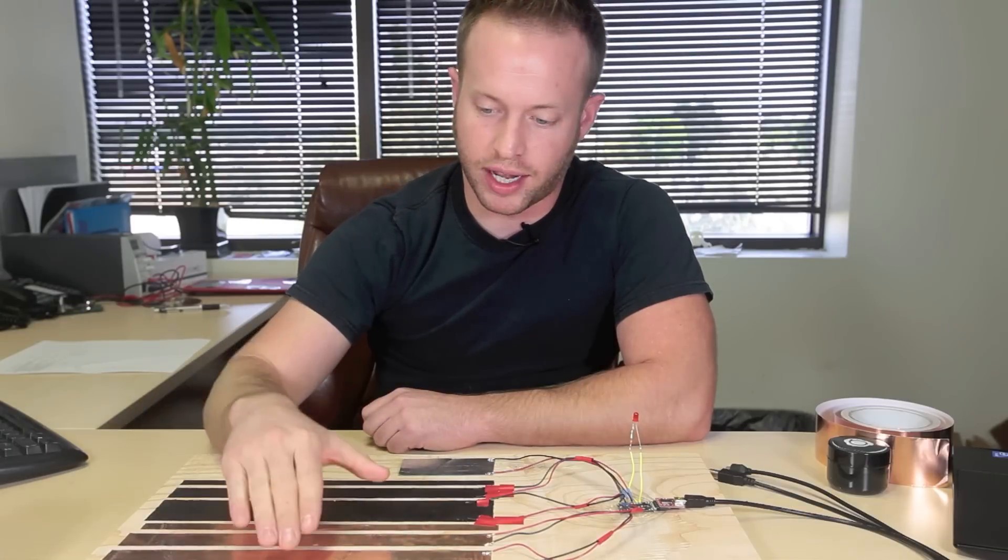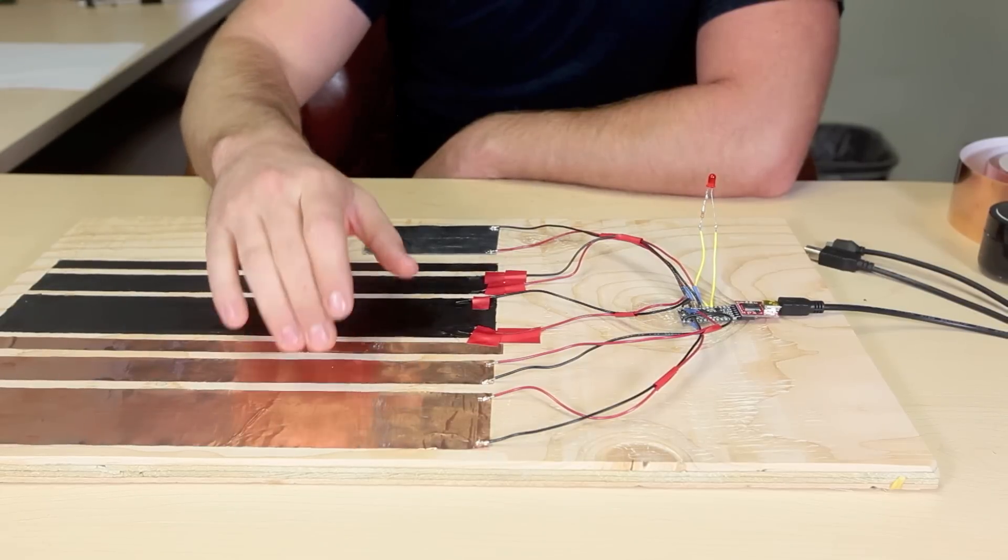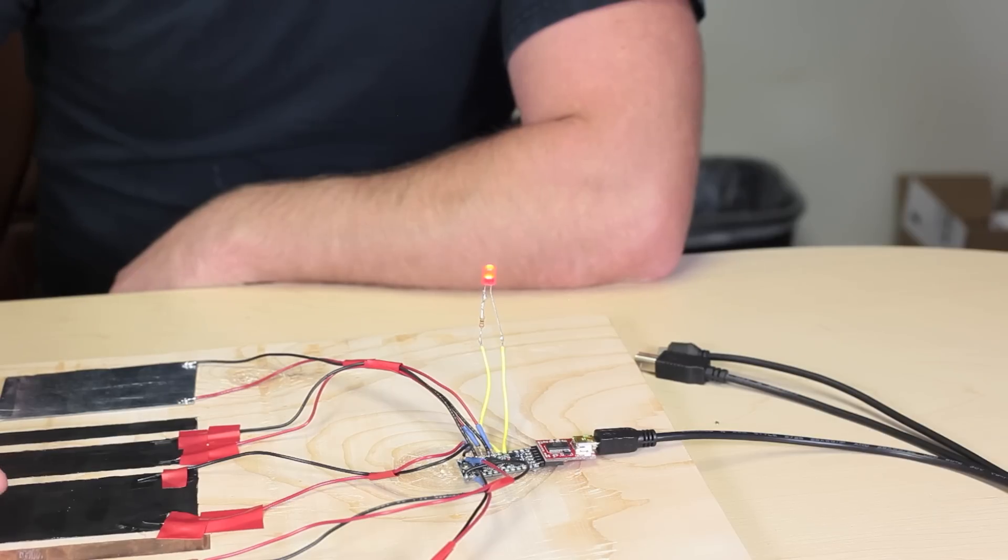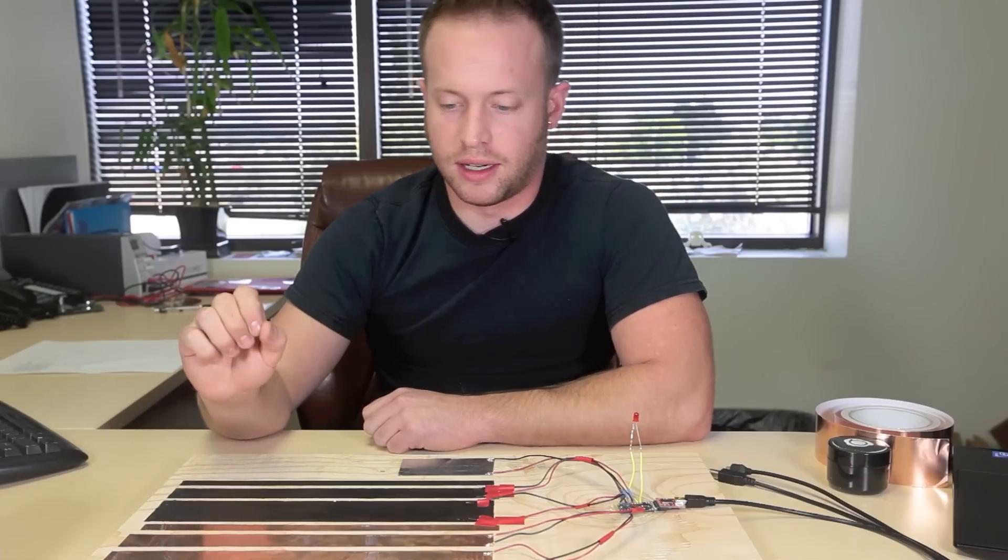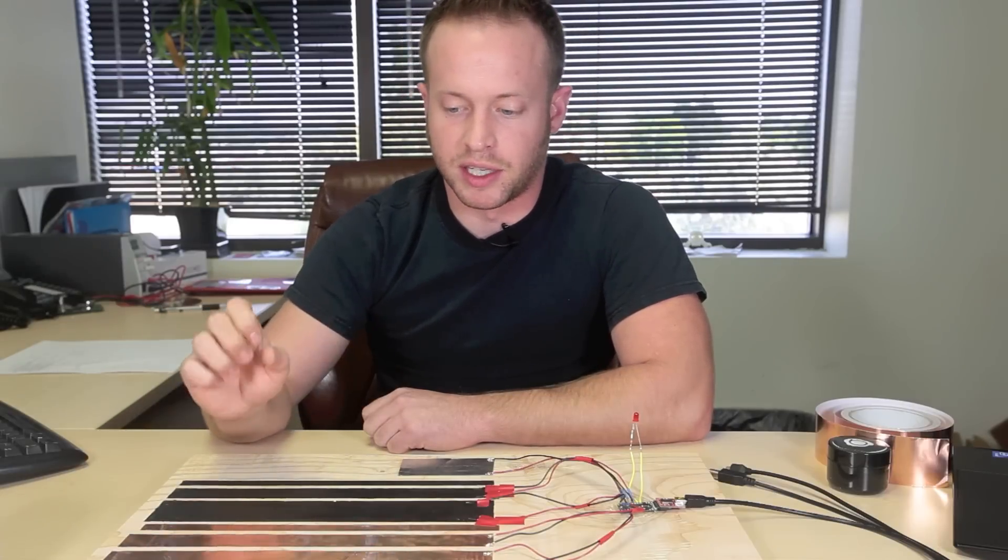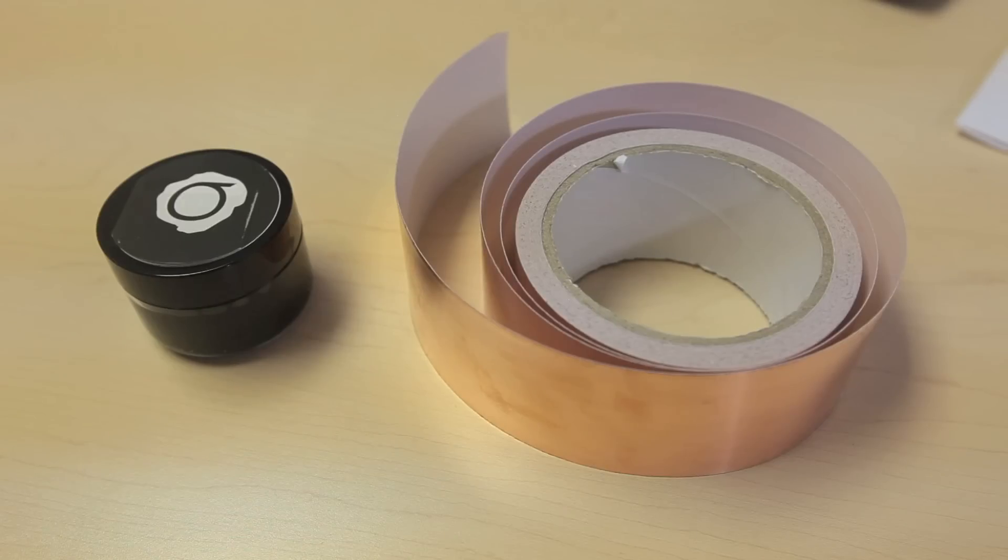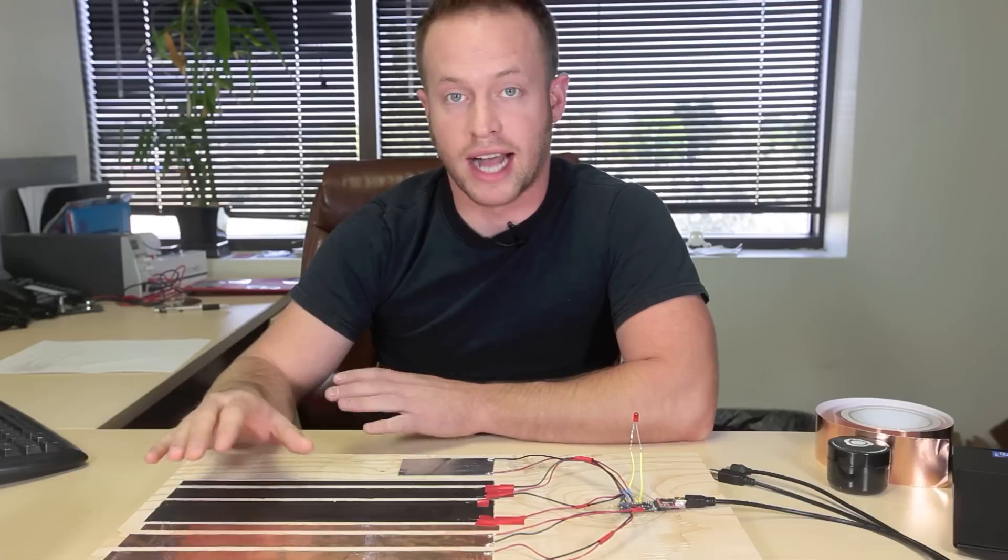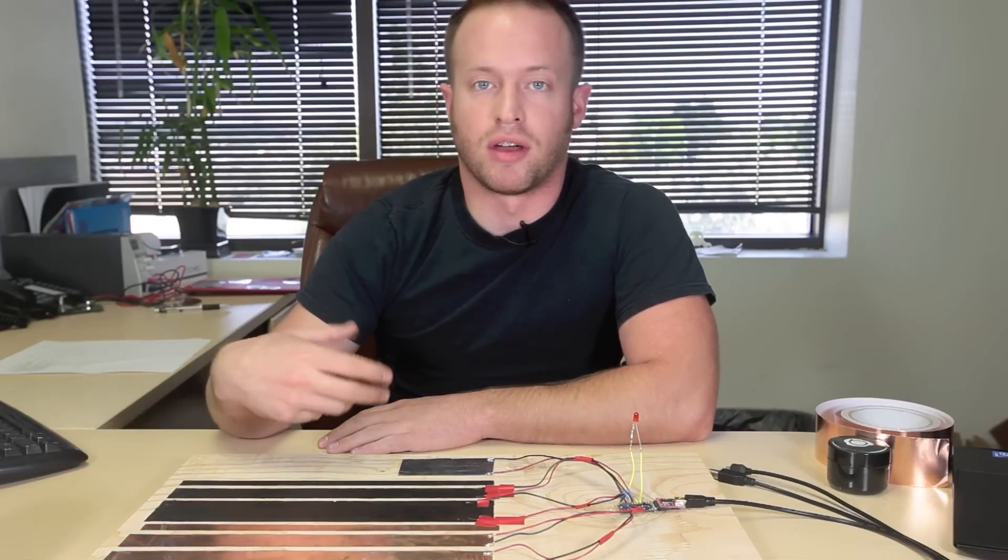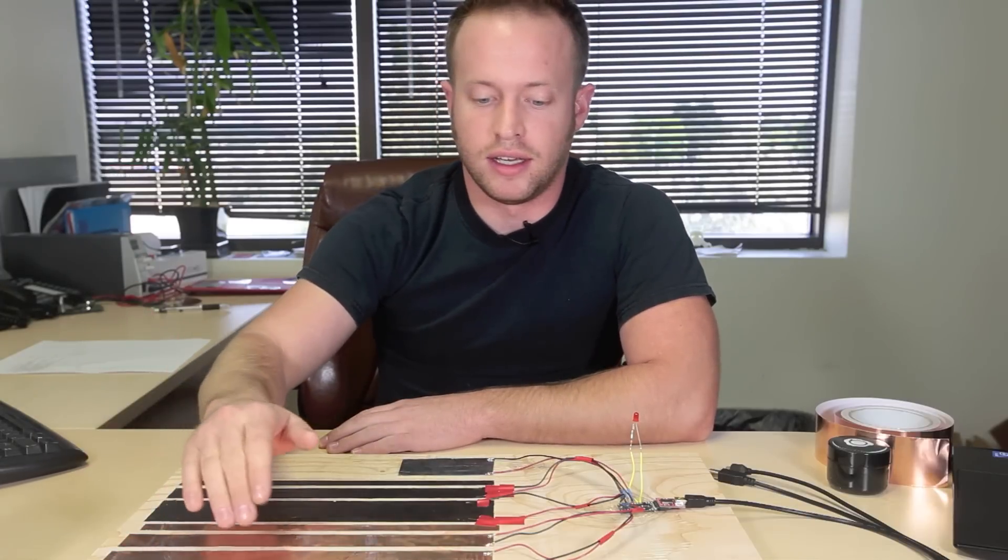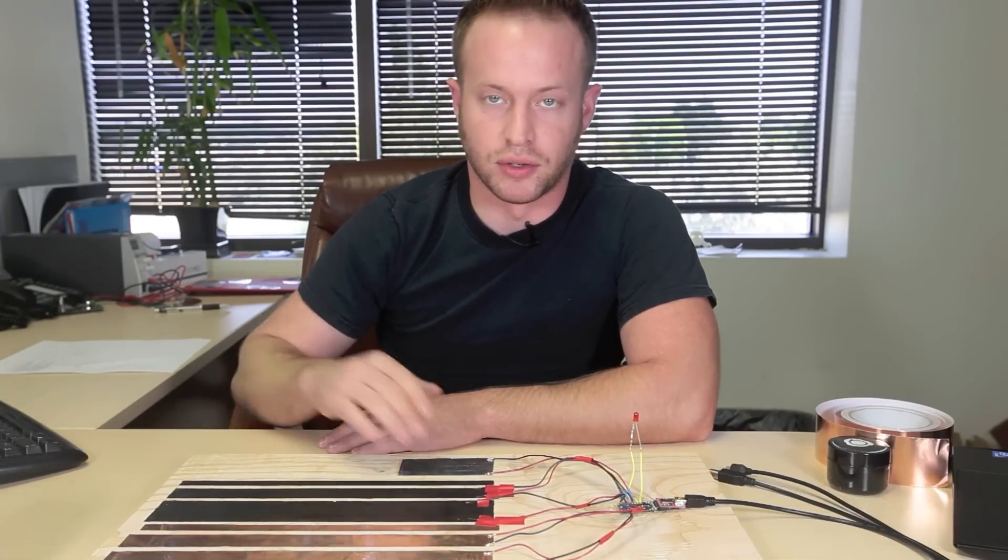You can see that when I touch one of these elements, the LED will light up. The reason I have multiple different elements is because I wanted to test in real life, not just in theory, how well these would react, how quickly they would react, so that when my friend puts it on his wall, he has a proof of concept to go off of.